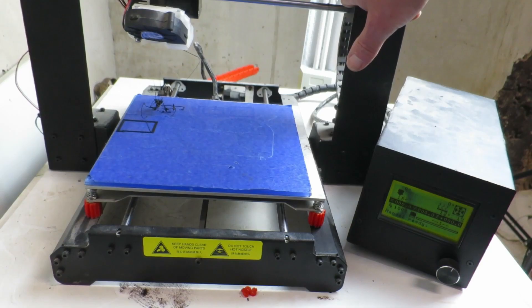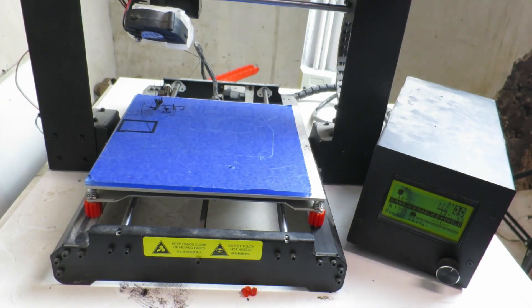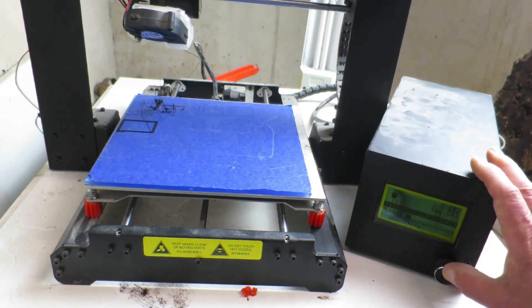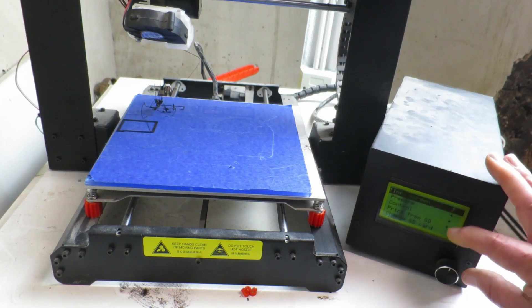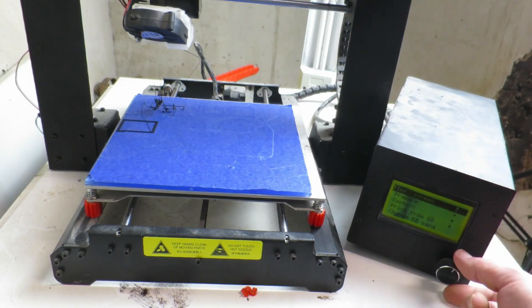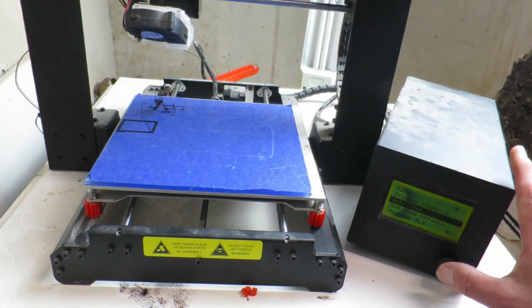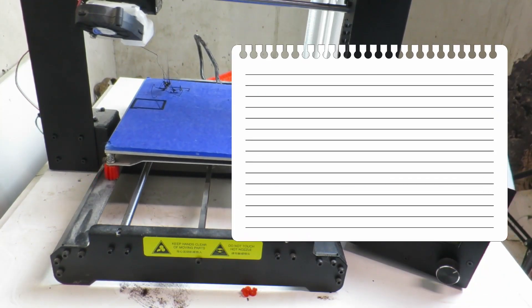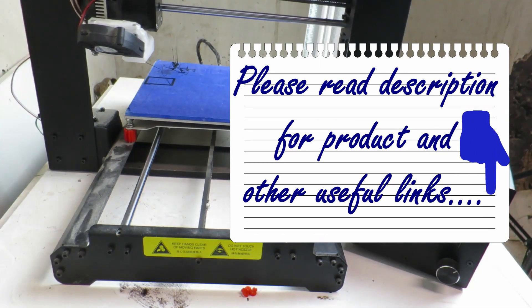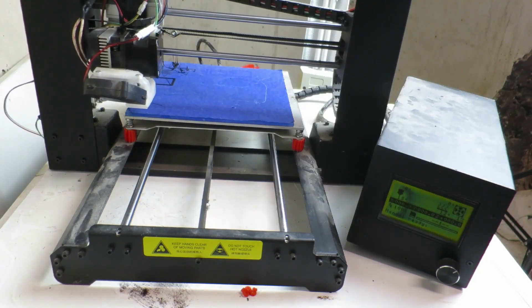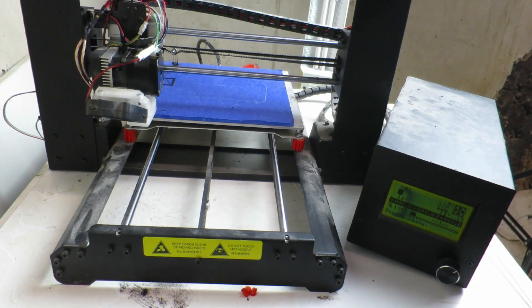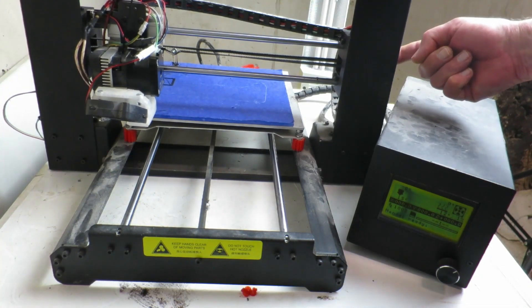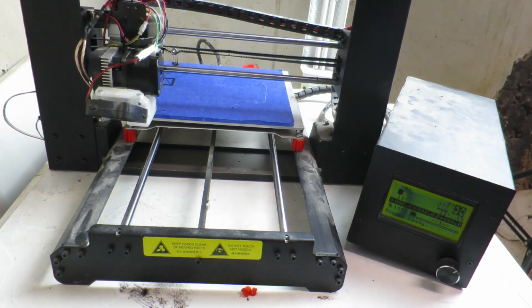So in our menu here, we go into Prepare and Auto Home. Now we can see the head of the screw that's holding that on.